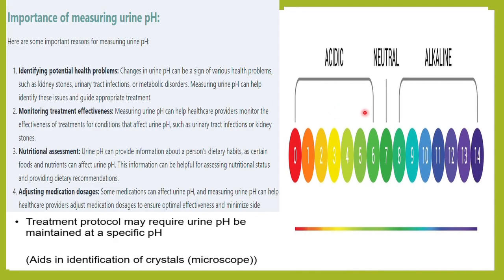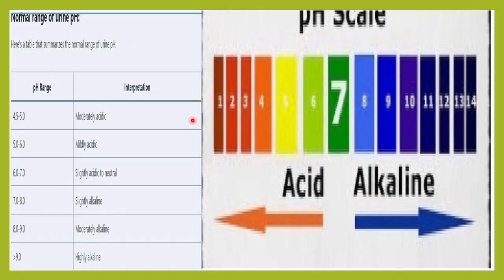Why do we need urine pH? First, to identify conditions — a pH of 4.5 to 5 is moderately acidic, a pH of 7 to 8 is slightly alkaline, and if it is more than 9 it is highly alkaline. This is how we grade or interpret the pH.